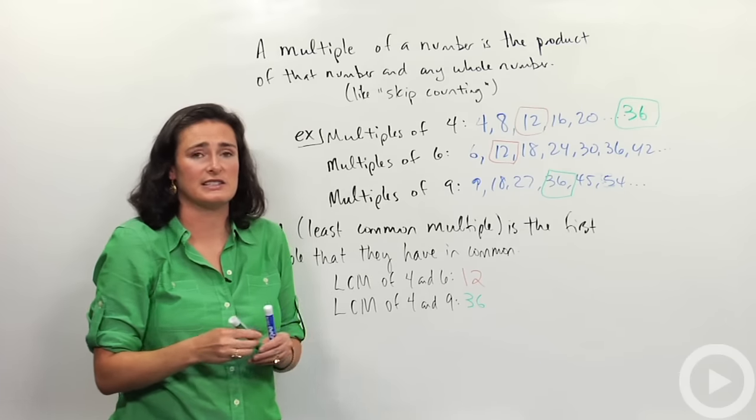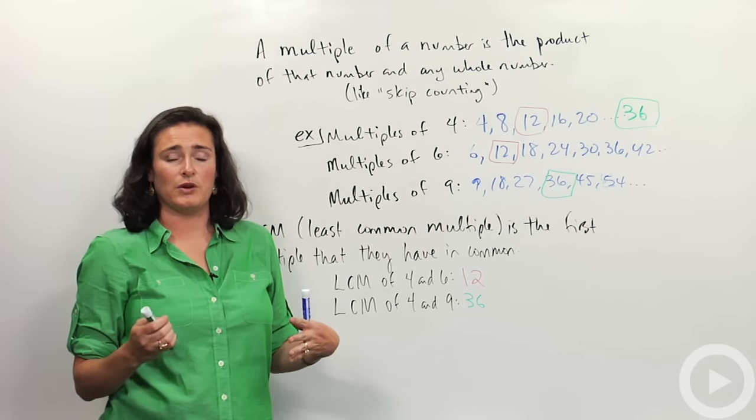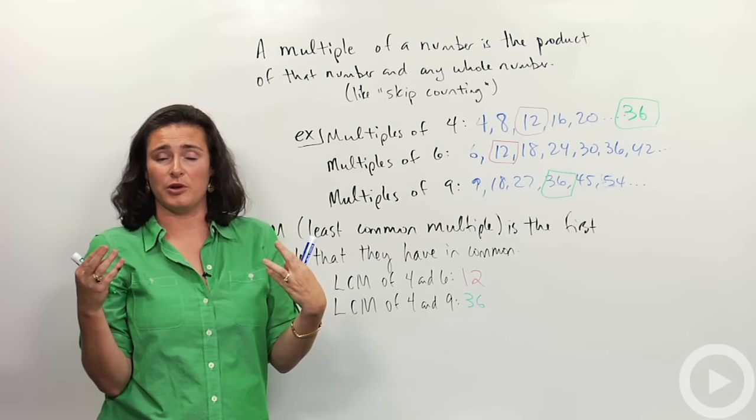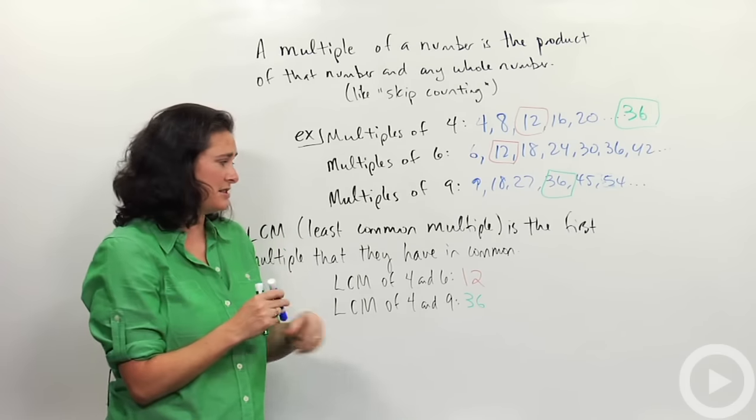Now, an important thing to look at here is that sometimes the least common multiple is the product of those numbers. Like when I did 4 and 9, the least common multiple was the product. 4 times 9 is just 36.